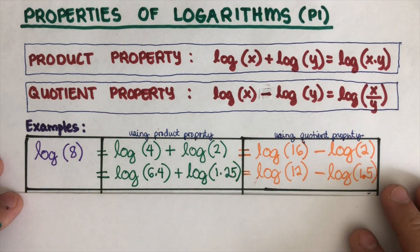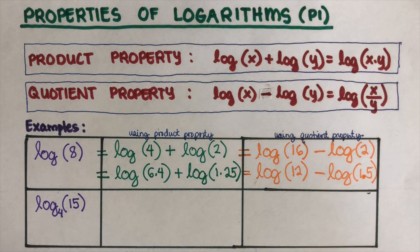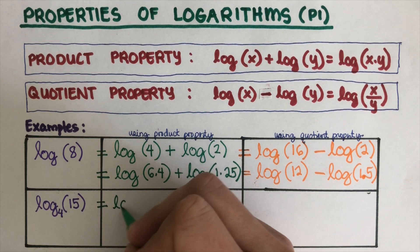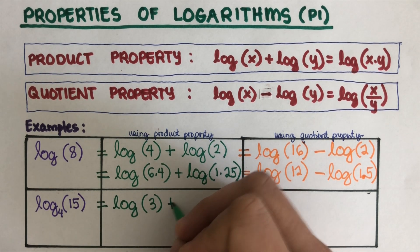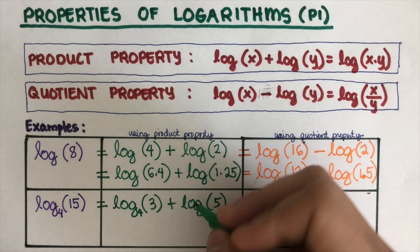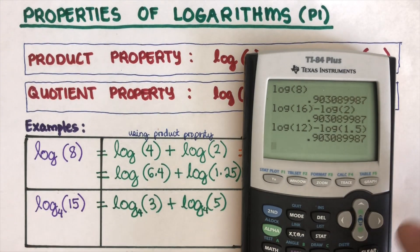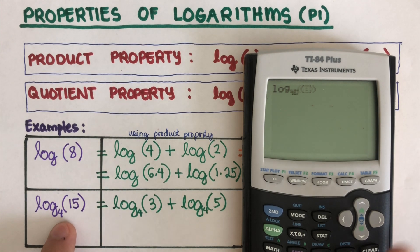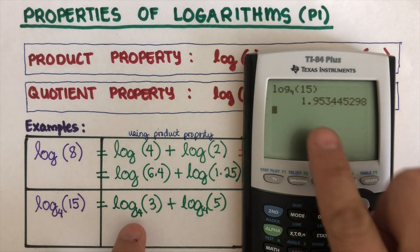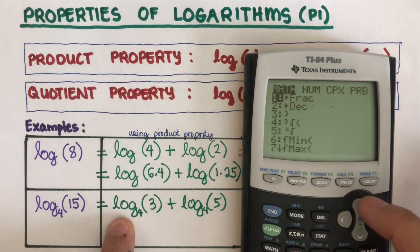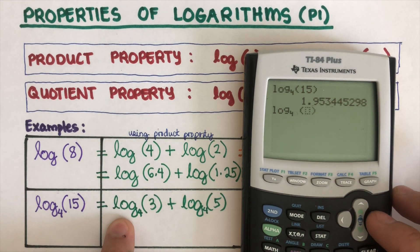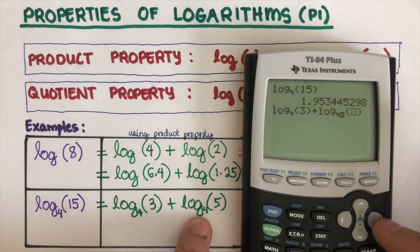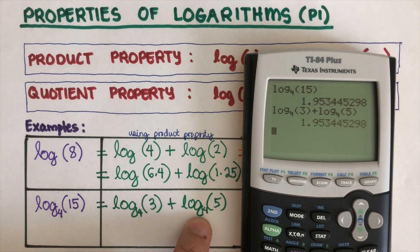These properties also work with logarithms that have bases other than 10. For example, with base 4: log base 4 of 15 can be written as log base 4 of 3 plus log base 4 of 5, since 3 times 5 is 15. Let's check with the calculator: log base 4 of 15 equals log base 4 of 3 plus log base 4 of 5 — the answers match.